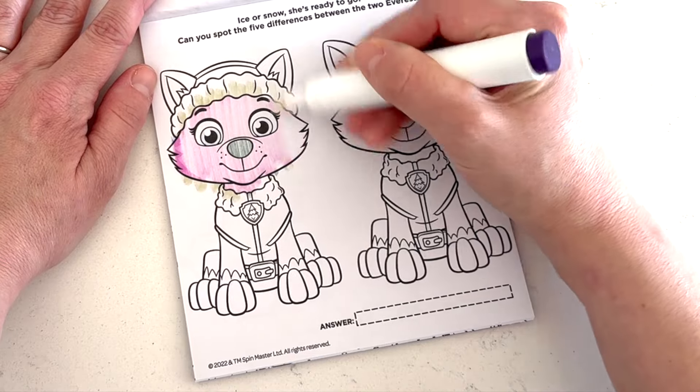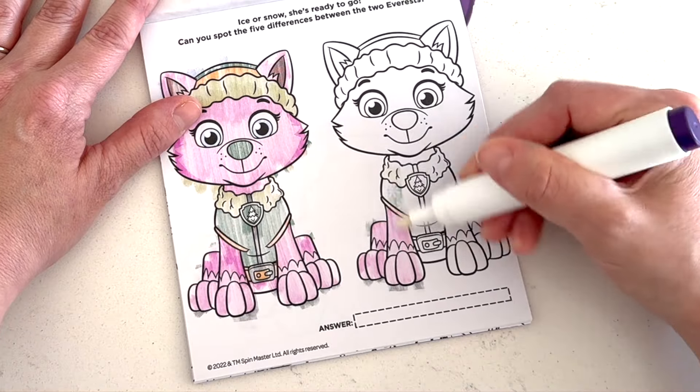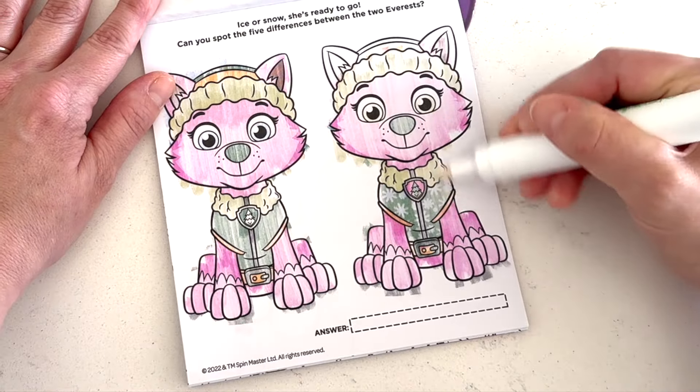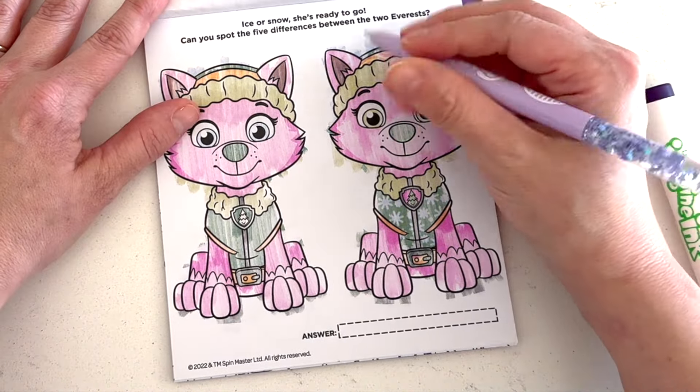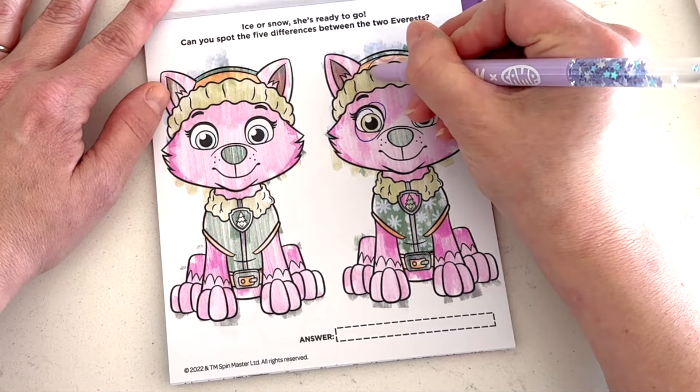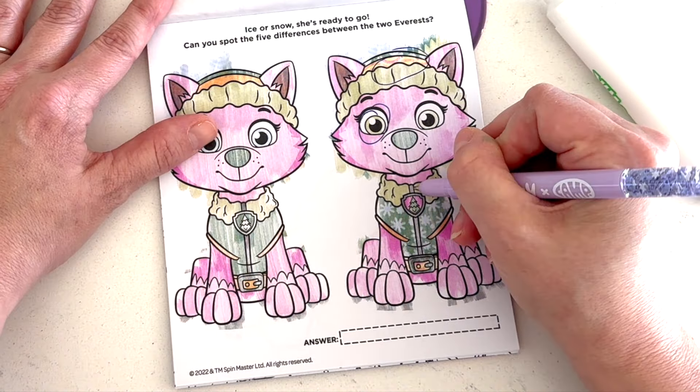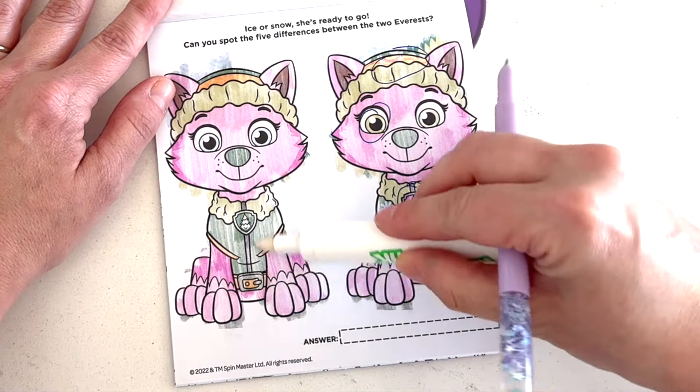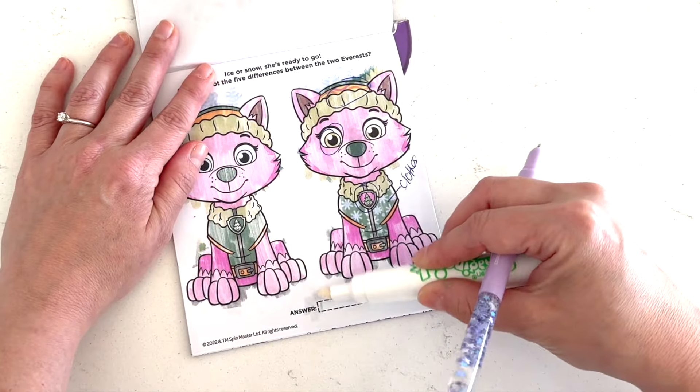Ice or snow, she's ready to go. Can you spot the five differences between the two Everests? Hmm. Do you see anything? Do we need to color her in? Maybe we need to color her in first. Okay. We definitely need to color her in. So let's see. Her eyes are a different color. I think that is stripes right there instead of swirly lines. Ears are the same. Nose. Her little badge. Her clothes.